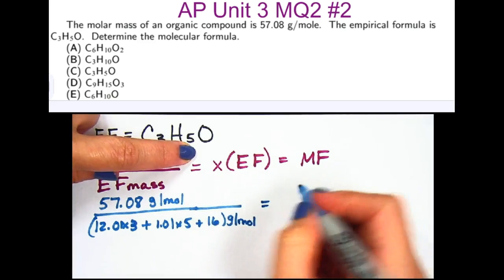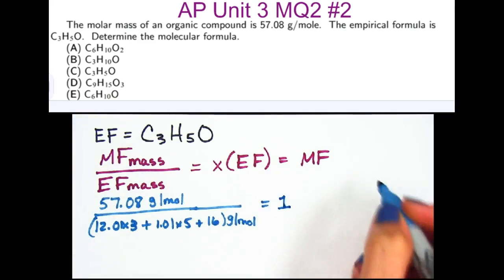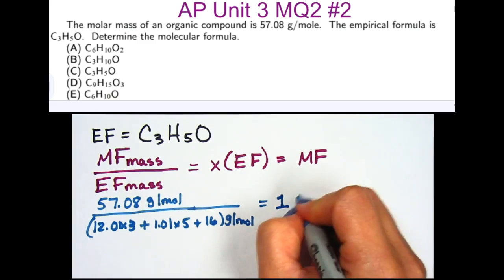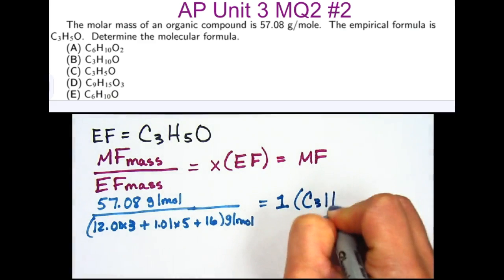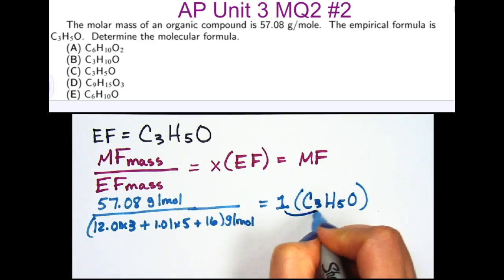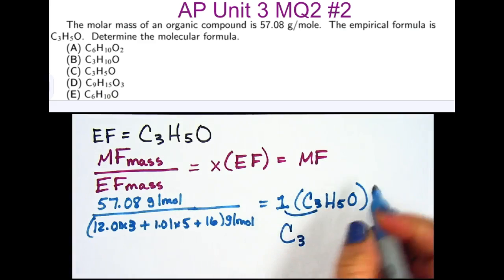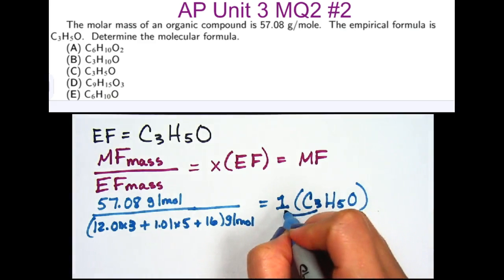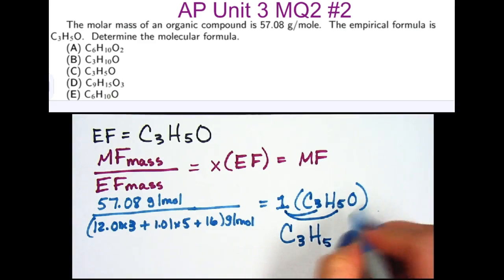So this math gives us an integer of 1, which we then multiply across the empirical formula. 1 times 3 means we have 3 carbons. 1 times 5 means there's 5 hydrogens.